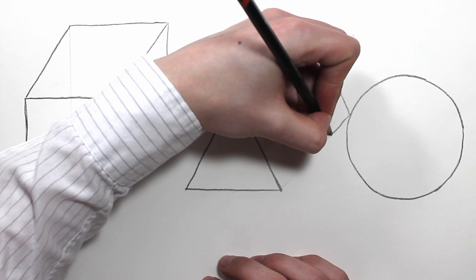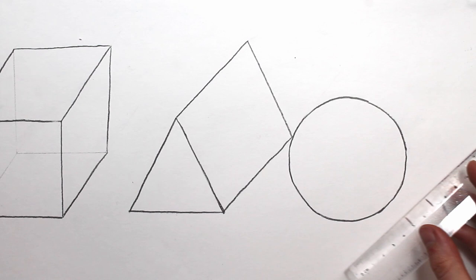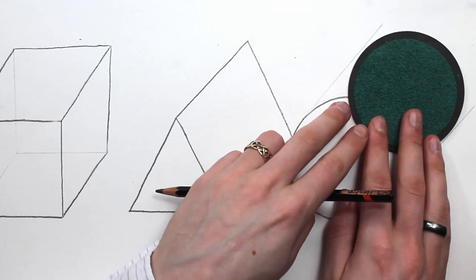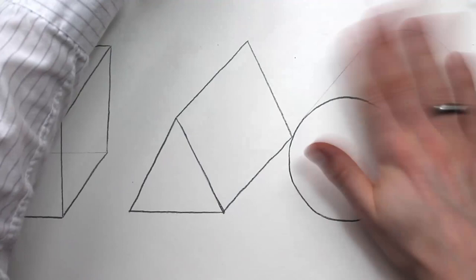So our circle is slightly different just because it's a curved surface. So all I'm going to need to do, rather than just closing that off with a straight line, I want to try and repeat that same curve at the back. I can get rid of bits I don't need and I can then just go over those lines a little bit heavier again.